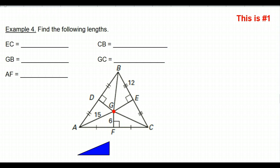Look at line GE that I've drawn here in pink. Is this a perpendicular bisector for segment BC? Hopefully you can see — yes, this is a perpendicular bisector. It's perpendicular, 90 degrees. It's a bisector. These two pieces are equal, so it goes right through the middle. So this pink line is a perpendicular bisector.